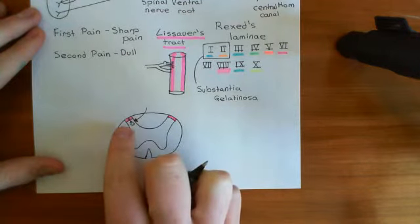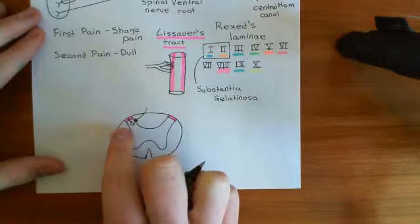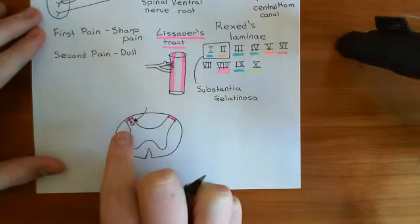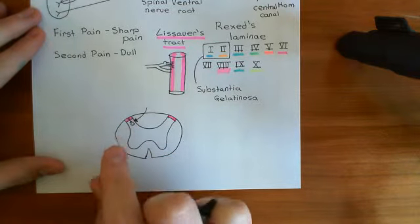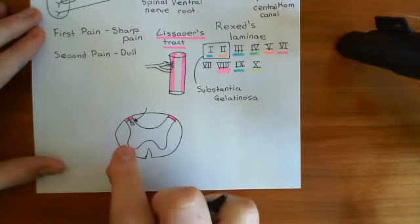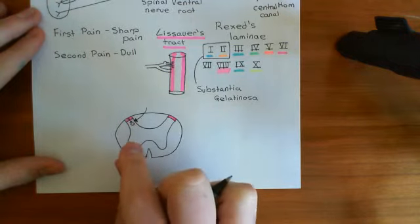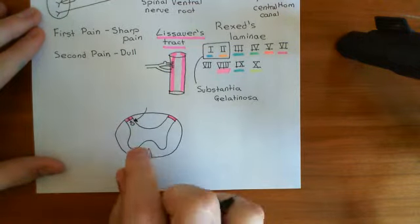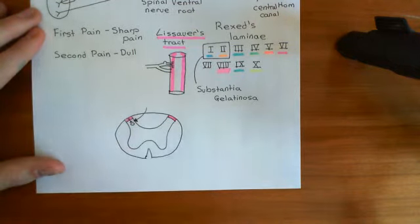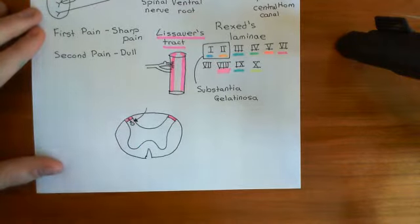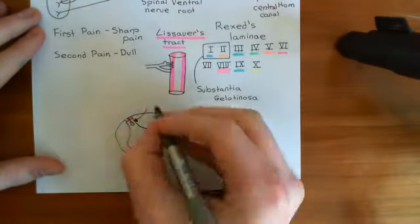This synapse is going to be key. This is the point where many of the descending pathways that influence pain experience will act. In addition, opioids will act on this synapse — but we'll come back to that because opioids are extremely complicated drugs. They act all over the place and at several points in the brain as well.